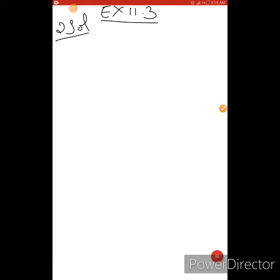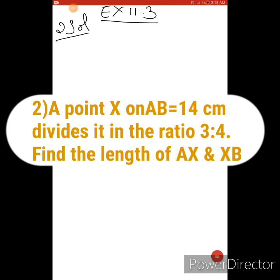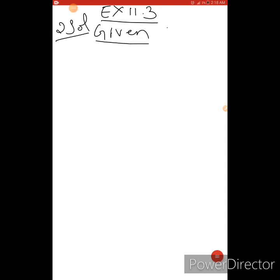Next problem students. Second one. A point X on AB equals to 14 centimeters. Divide it in the ratio 3:4. Find the length of AX and XB. I will write what is given. AB is given, that is equals to 14 centimeters. Clear? And the ratio is also given. Ratio is 3:4. What do you have to find out? You have to find out AX equals to how much? XB equals to how much? Clear?